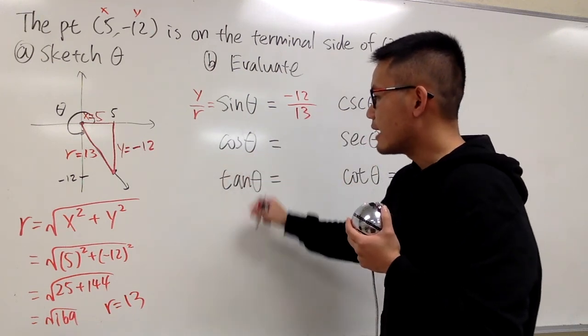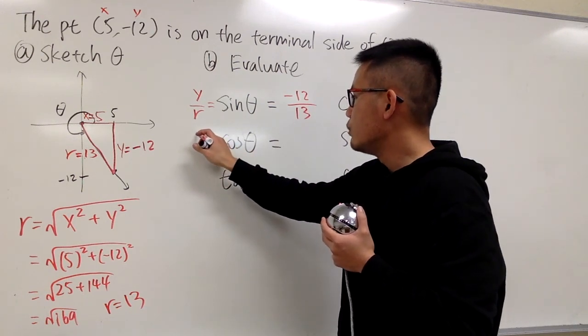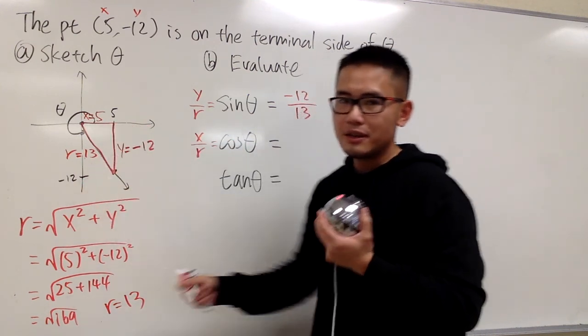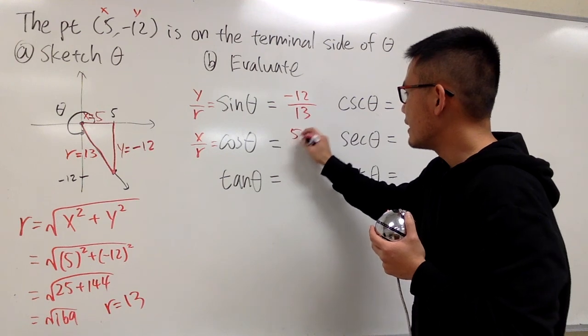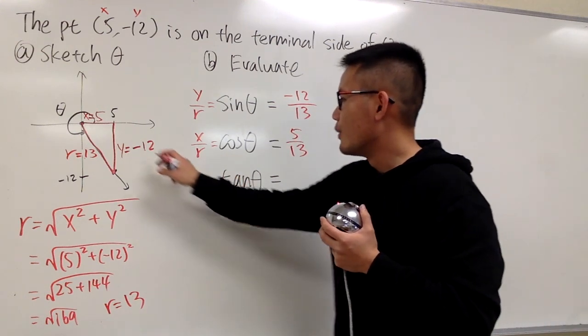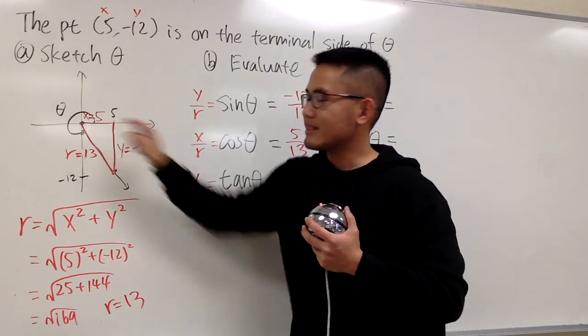And then, cosine theta will find this kind of definition. It will be x over r, and the x is 5, r is 13. So the answer to this is just 5 over 13. And for tangent, it's y over x.